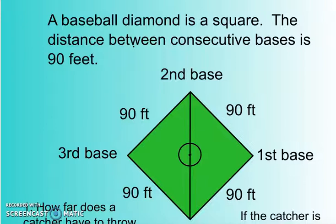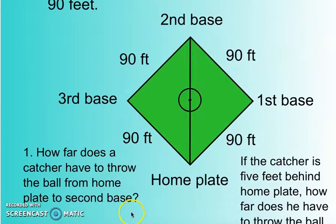A baseball diamond is a square. The distance between consecutive bases is 90 feet. Here is a drawing of that. Here is home plate down here, then first base, second base, third base, and all of them are 90 feet apart. The first question I have is, how far does the catcher have to throw the ball from home plate, standing on home plate, to second base?